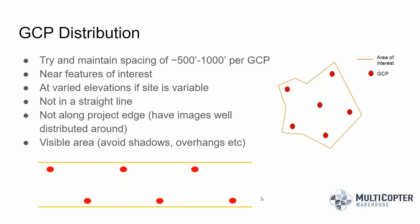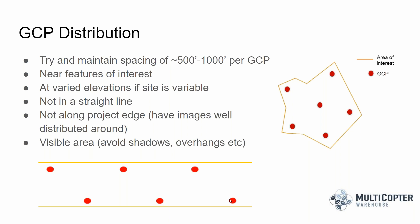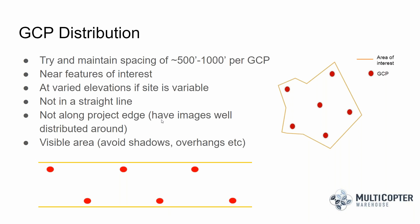For a corridor project like a roadway or pipeline, you wouldn't want to put your ground control points just at the centerline because you'd have that linear axis and could have warping. Instead, distribute points such that you get good triangulation, which will keep your project flat and level at the correct locations. Also be mindful not to put ground control points too close to the project edge — you want images from all different perspectives around each GCP. If all images are from one direction, you'll skew the result in that direction.